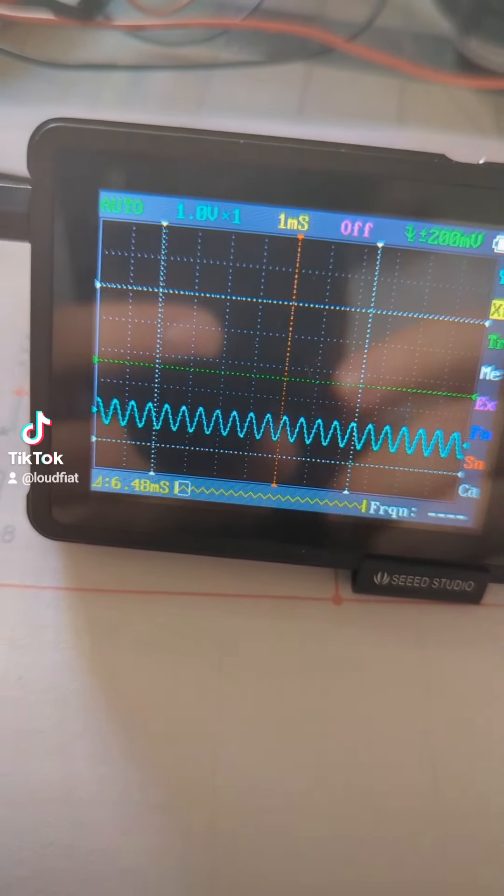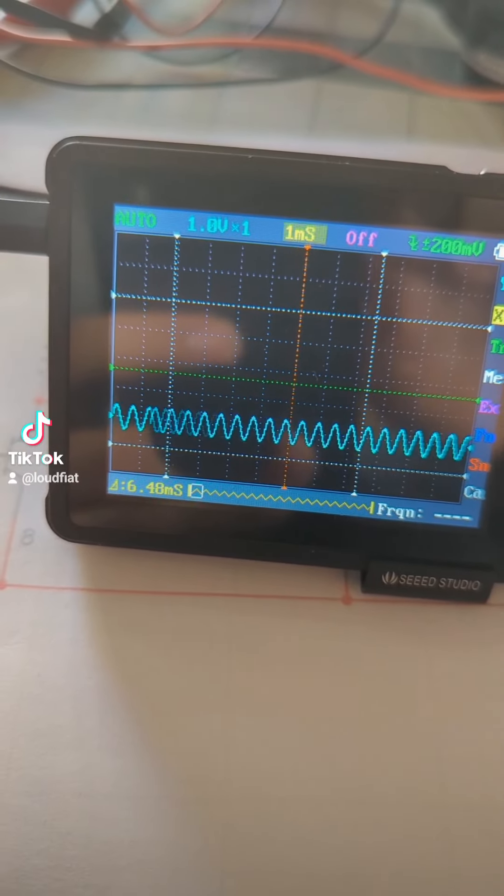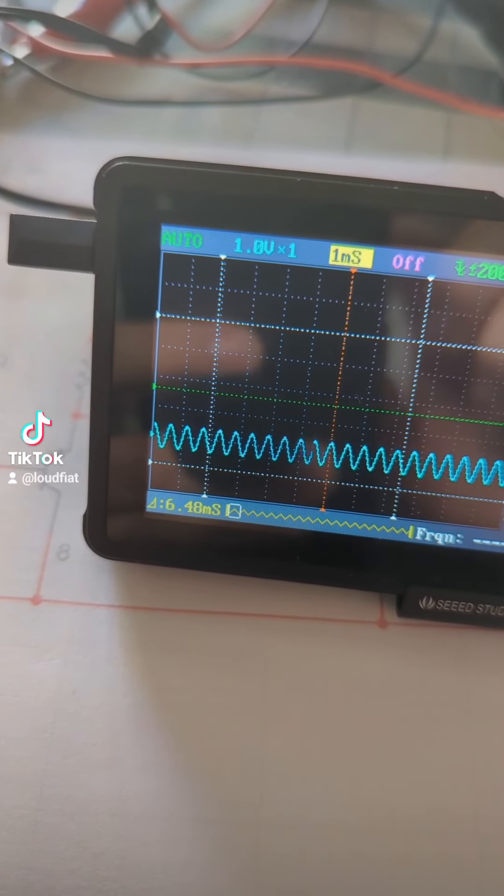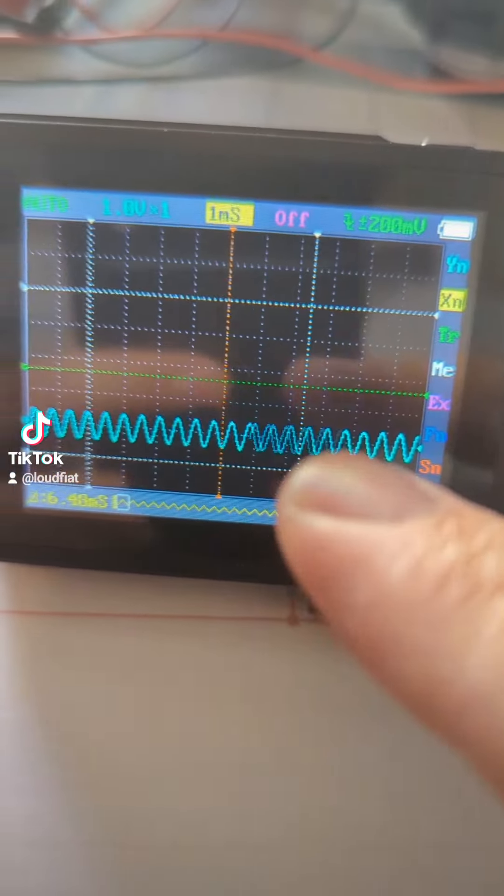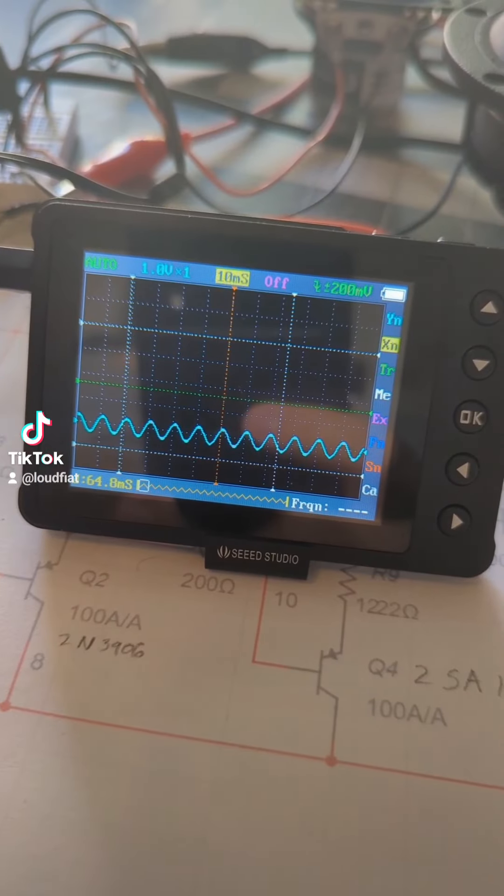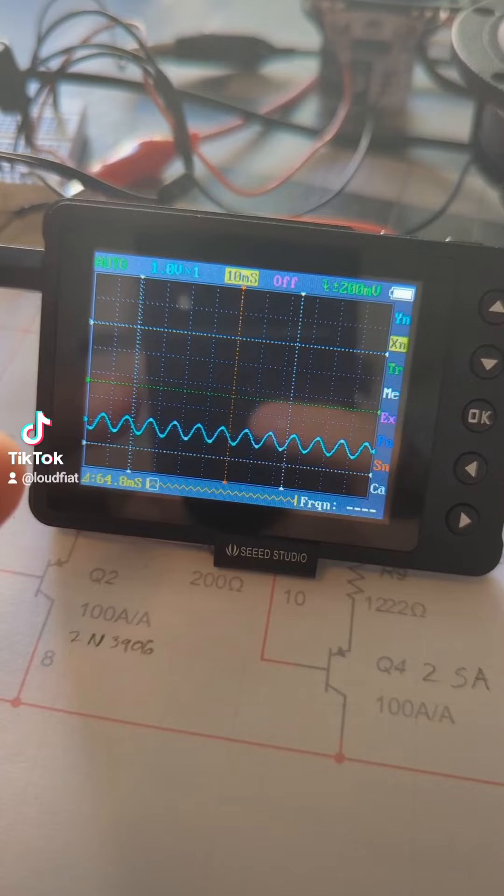So here's the oscilloscope, the signal I'm generating, currently at about 1800 hertz. You can see it's quite clean. And here we have a 100 hertz test tone.